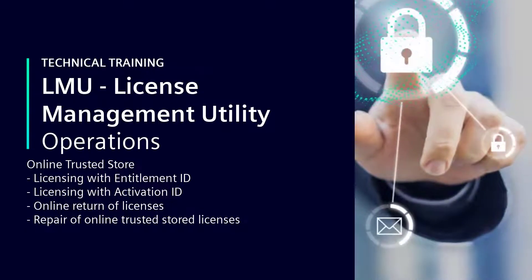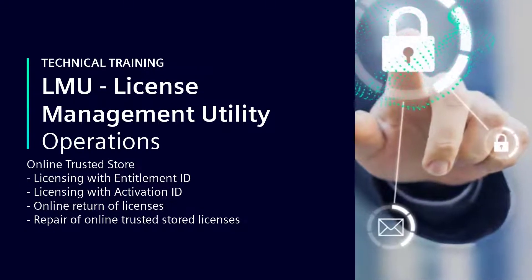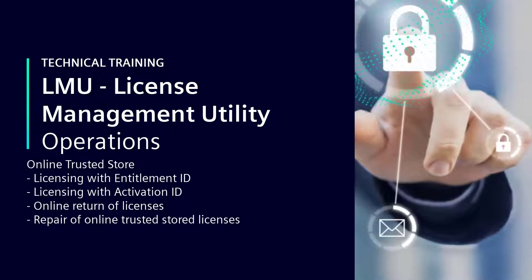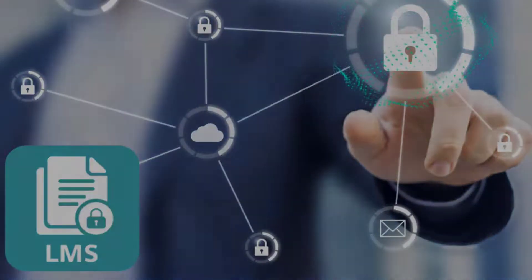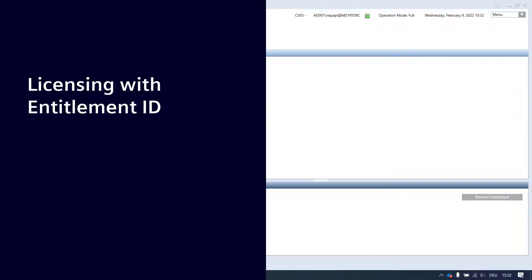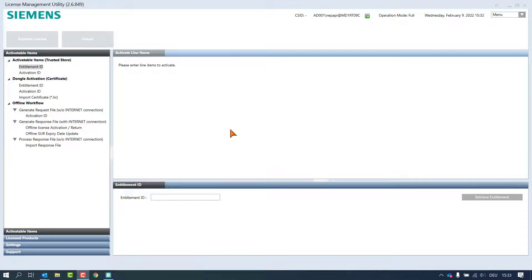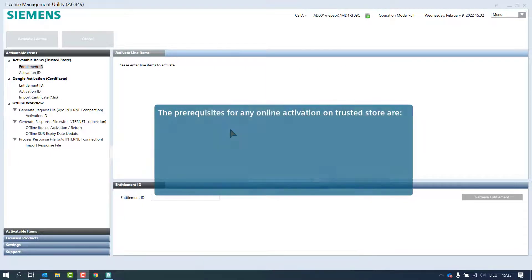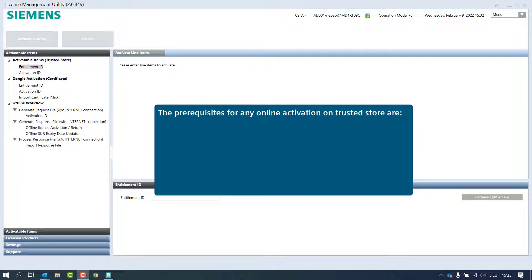Operations Online Trusted Store: Licensing with Entitlement ID. The prerequisites for any online activation on Trusted Store are that the LMU is installed in a trusted environment.